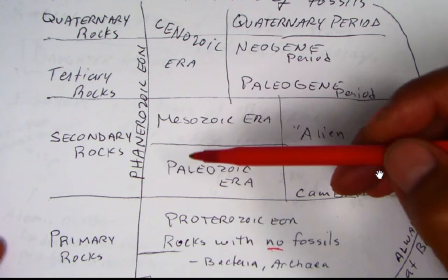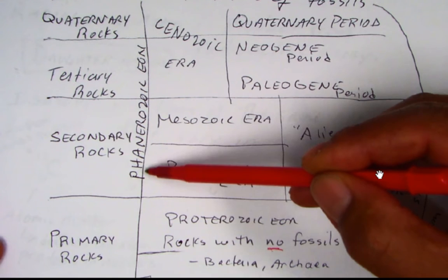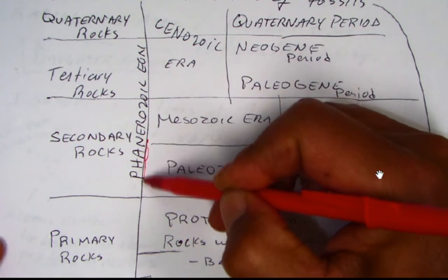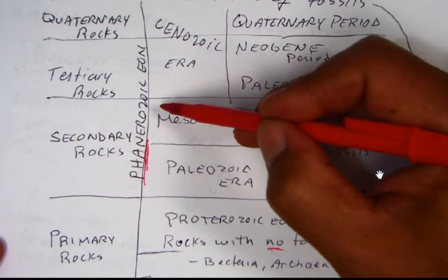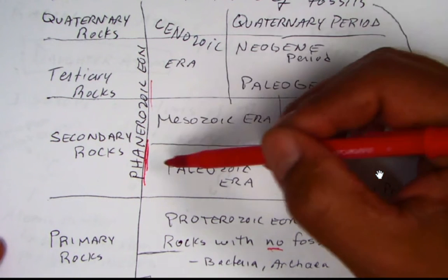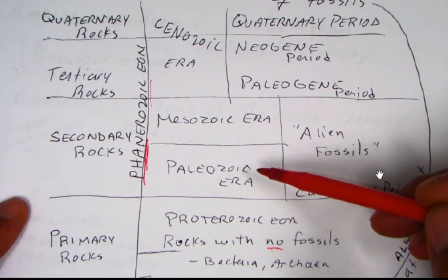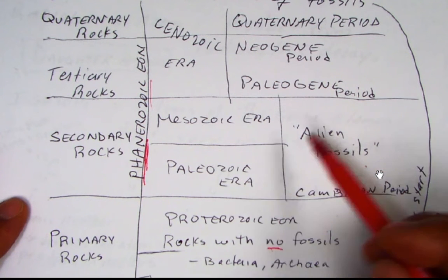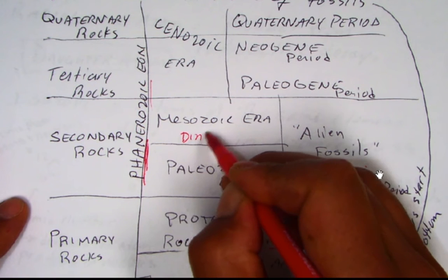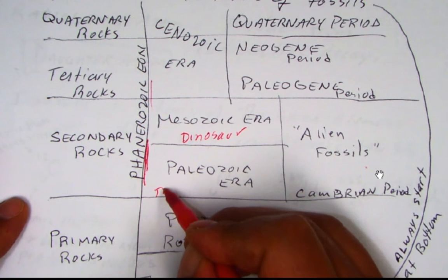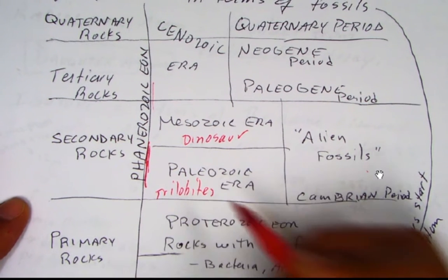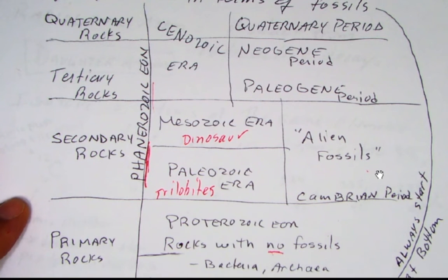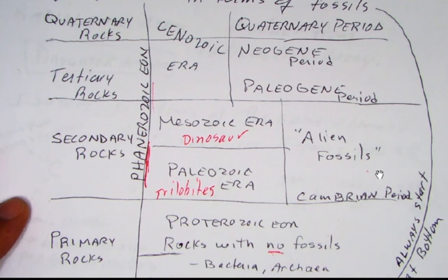One important concept is that we have this Phanerozoic eon. 'Phan' means visible — like phaneritic texture — and 'zoic' means life or animals. So these are rocks that have fossils. The secondary rocks had fossils that were alien-looking; we didn't recognize them. They didn't look like modern organisms, especially the dinosaurs or large reptiles. In the Paleozoic era we had trilobites, brachiopods, crinoids, and also some strange armored fish that we don't see anything like today.